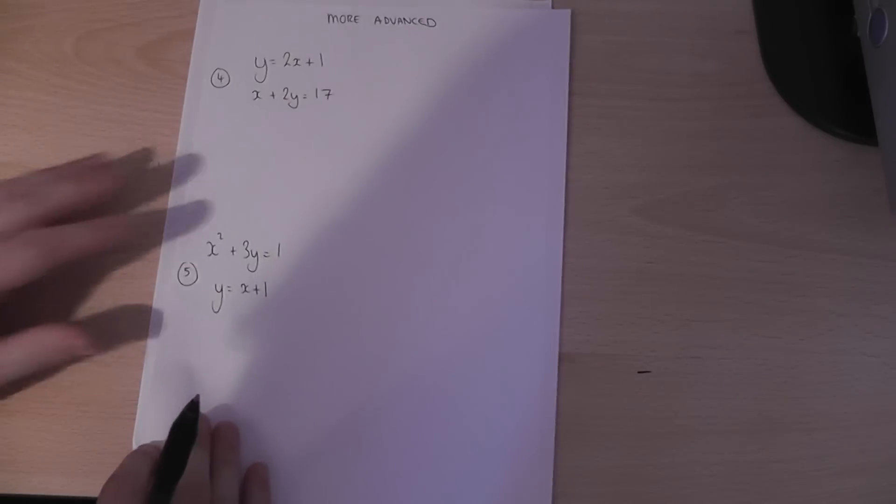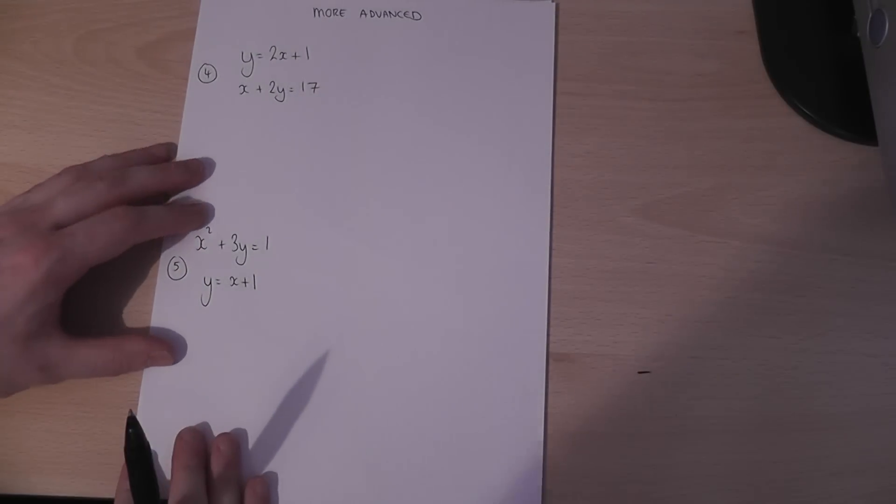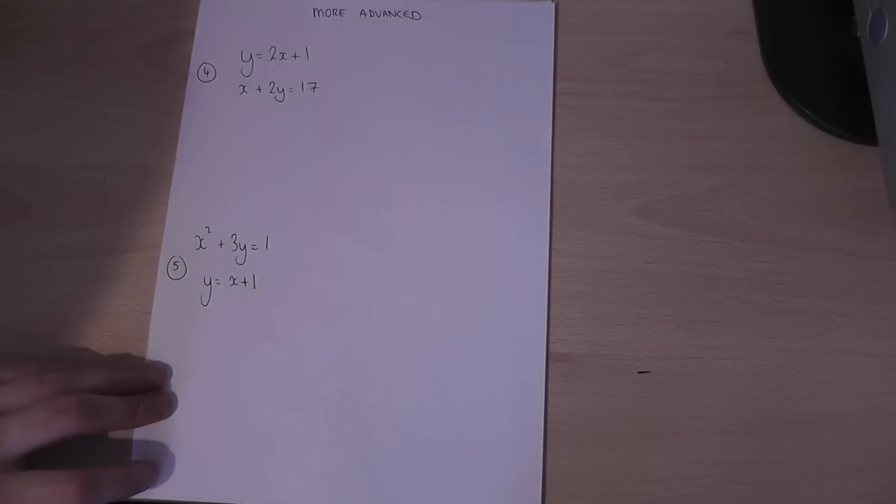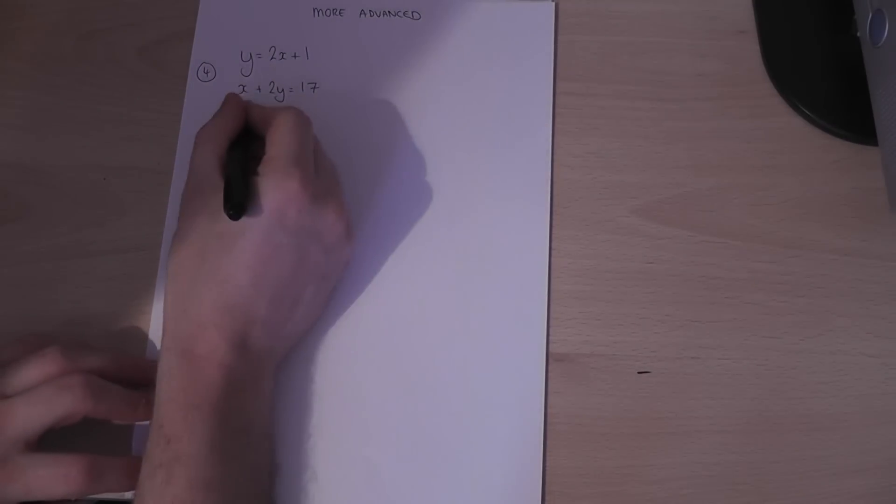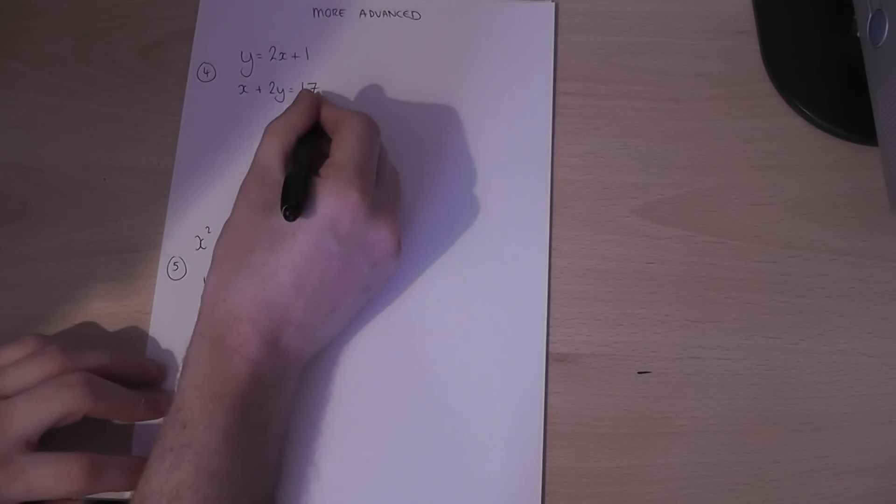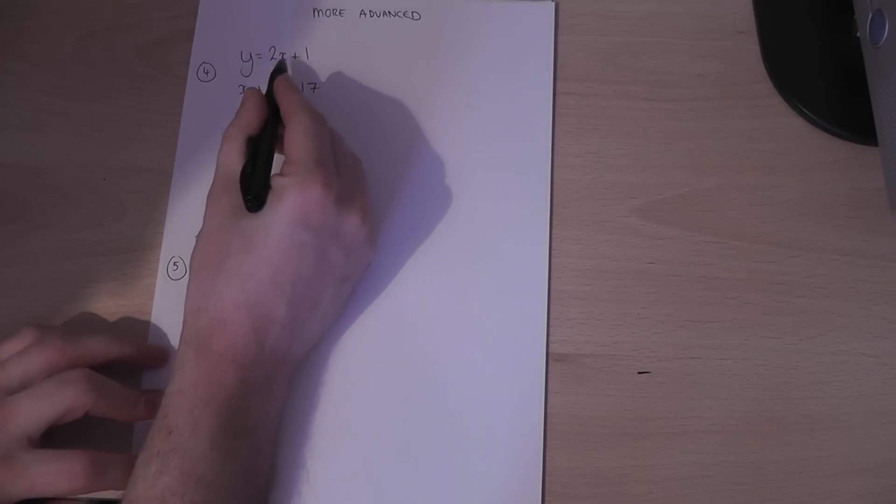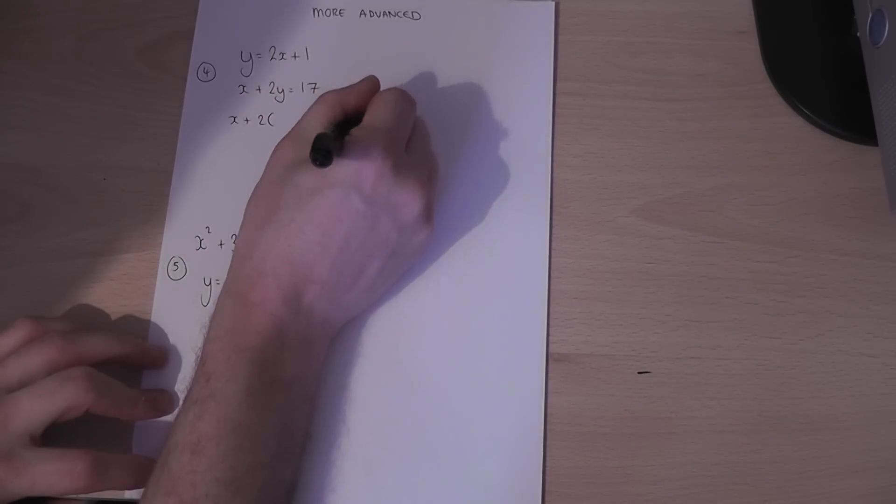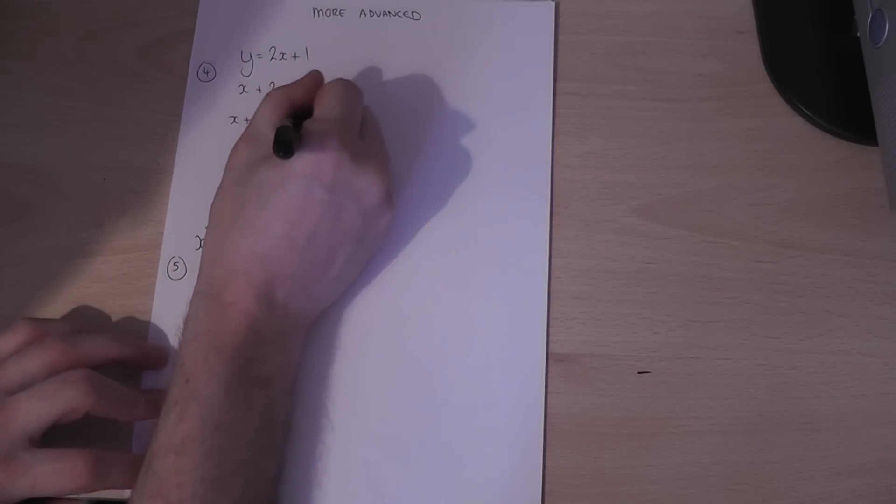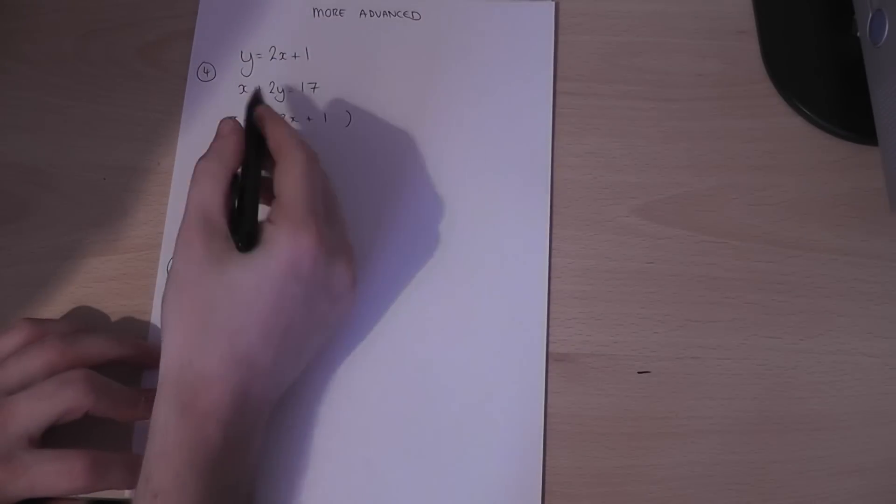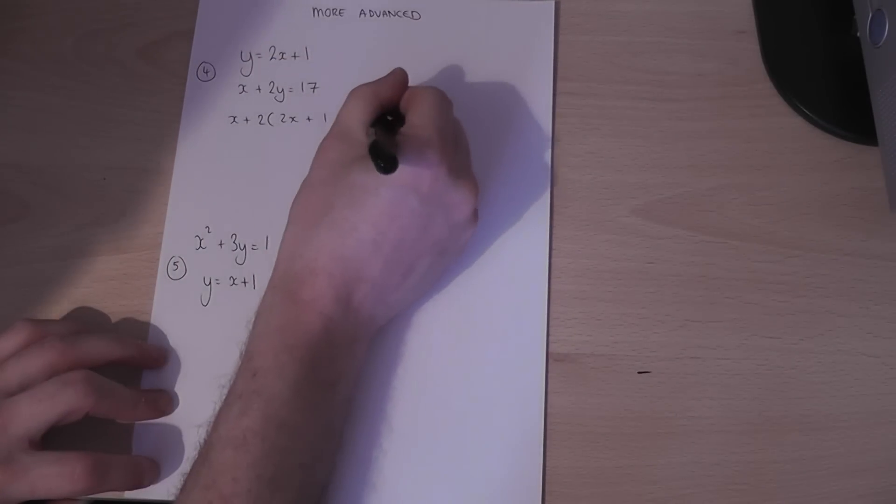The final two examples are classed as more advanced and it actually goes in the name of substitution. Now this is the main equation here. We've got x and y in. However, I know from the first equation y equals 2x plus 1. So I can replace the y in the second equation by 2x plus 1. So x plus 2 lots of y must equal 17.